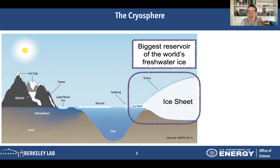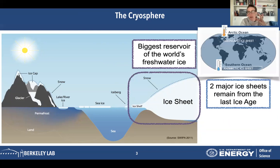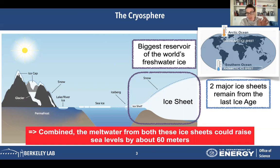Where are ice sheets located right now on this earth? There's one at the North Pole and another one at the South Pole — the Greenland ice sheet and the Antarctic ice sheet. The Greenland ice sheet is probably going to melt the fastest. But combined, the meltwater from both ice sheets could raise sea levels by about 60 meters — and 60 meters is huge. This is a major problem for coastal populations; San Francisco would be underwater.